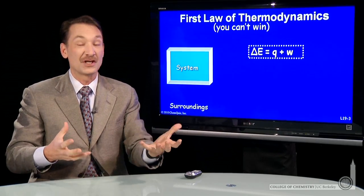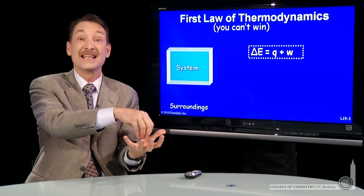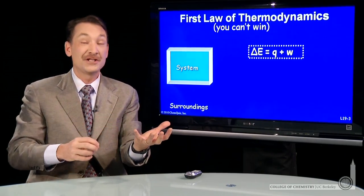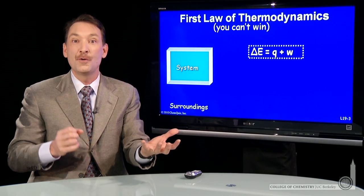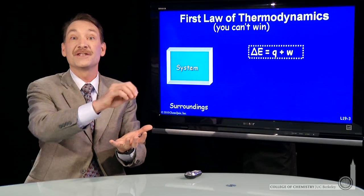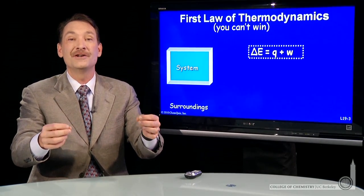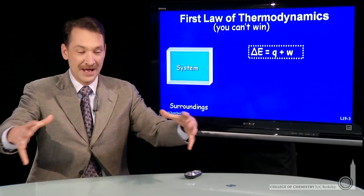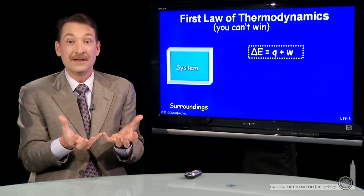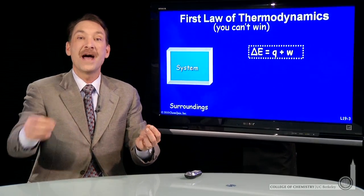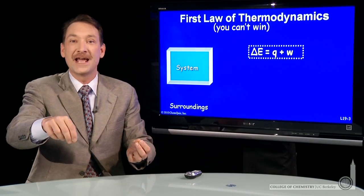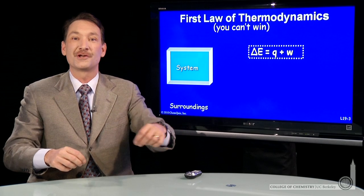Energy is a quantity that a system can contain, and energy can be used to do work or transfer heat. Heat and work are mechanisms by which energy is transferred. Energy is something you can have. Heat and work are mechanisms for transferring energy between the system and the surroundings.